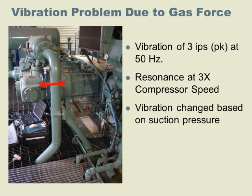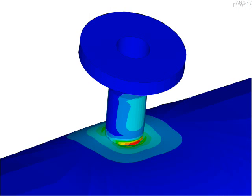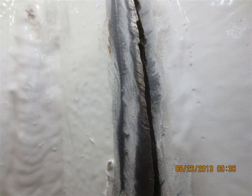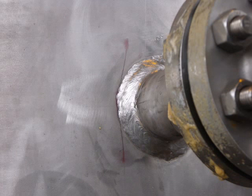Any piping connected to the compressor can be affected and experience fatigue failure. Areas of particular risk include nozzles, small bore piping such as sight glasses and drains, and other small connections.